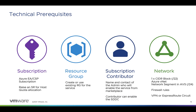There are a number of things you need to identify or configure prior to deploying the private cloud object. First, you'll need to identify the subscription you want to deploy AVS into — you can either create a new subscription or use an existing one. That subscription must be associated with an enterprise agreement or cloud solution provider plan. Once this is complete, you can create a support request with Azure support requesting host quota, as these AVS bare-metal hosts are finite per region.